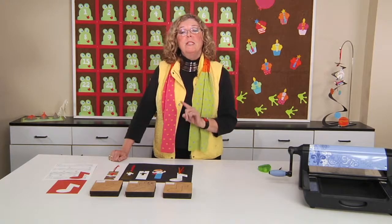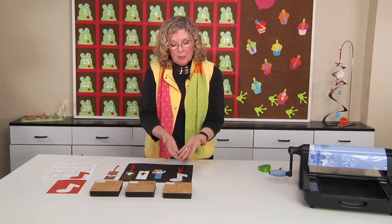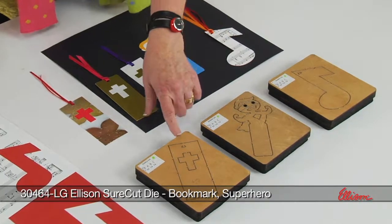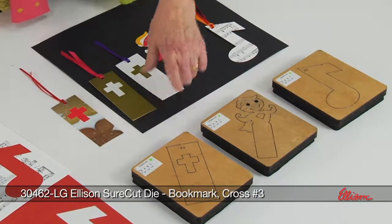Today we're going to talk about three different bookmark dies. If you look at the table, you'll see that there's one in the shape of a music note, there's a superhero bookmark, and then there's a cross bookmark.